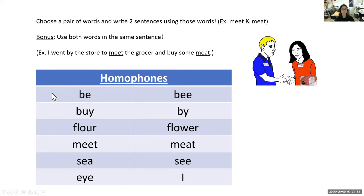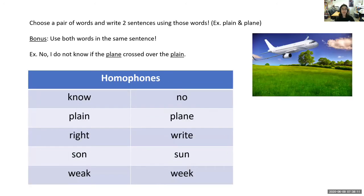Your instructions are to choose one pair of homophones and write two sentences using those words. For a bonus, write one sentence that combines both words. At this time you can pause the video and write your sentences.